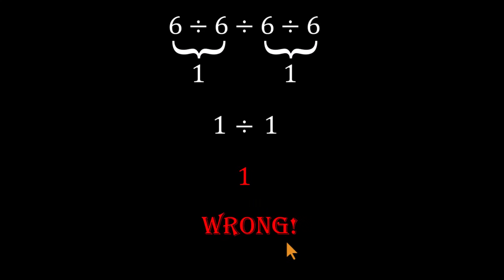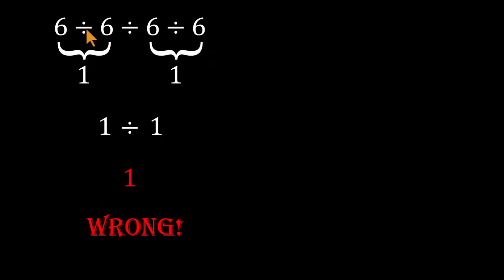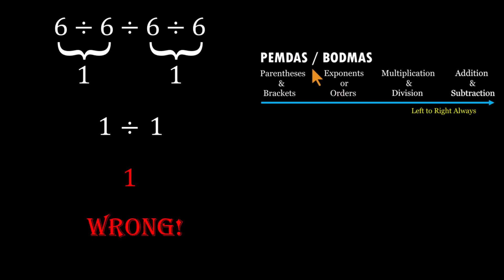Here's the problem. There are no parentheses in this expression, so we don't get to group numbers just because it looks neat. Under PEMDAS or BODMAS, when division appears repeatedly, there's only one rule that matters: go strictly left to right.